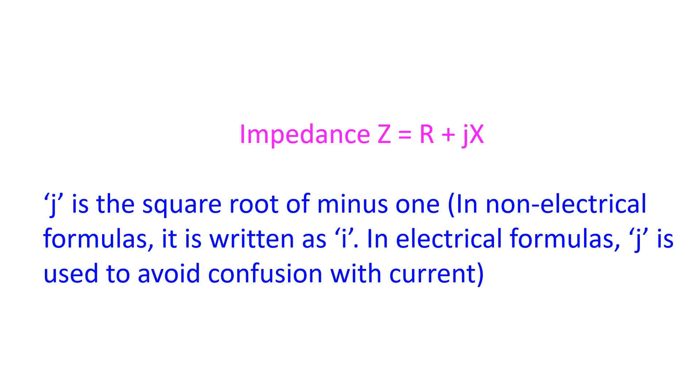Impedance of a circuit represented by Z is the sum total of contributions of resistive, capacitive and inductive elements in the circuit. But it is not a simple mathematical sum as in case of resistors connected in series. When a capacitor is placed in series with an inductor, their contributions to the total impedance of the circuit are opposite.